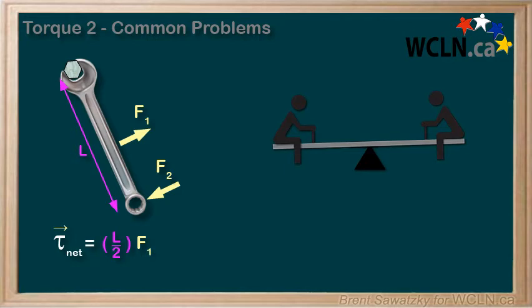And it's positive as it's causing a counterclockwise torque. We also have the torque caused by F2, and it's at the end of the wrench, or a distance of L from the pivot point, and it's causing a torque of L times F2. But this time it's negative, as this one is causing a clockwise torque, and that's our net torque.